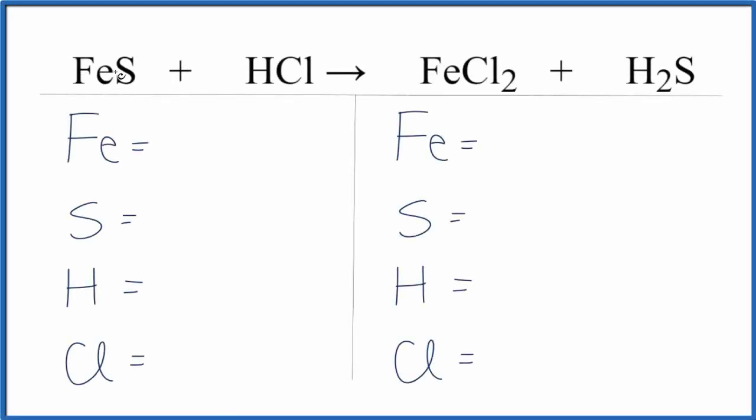In this video, we'll balance the equation of FeS plus HCl. So let's add the atoms up on each side of the equation. We have 1 Fe, 1 S, 1 H, and 1 Cl.